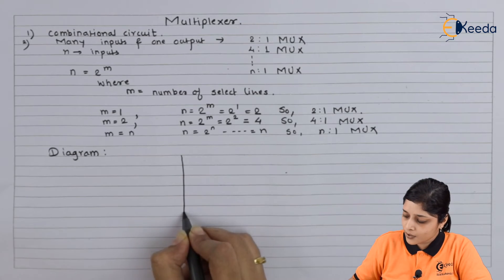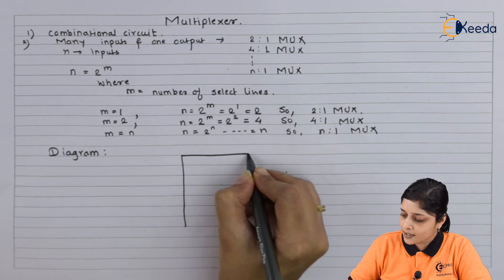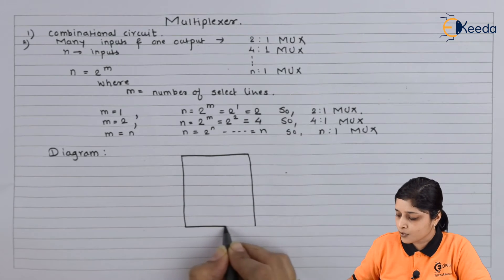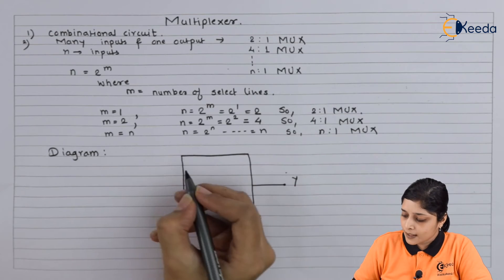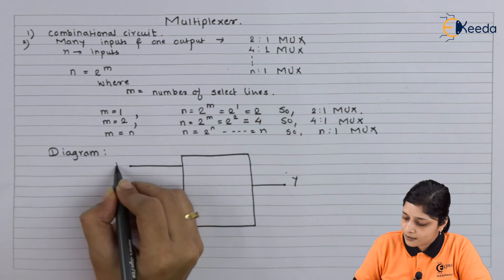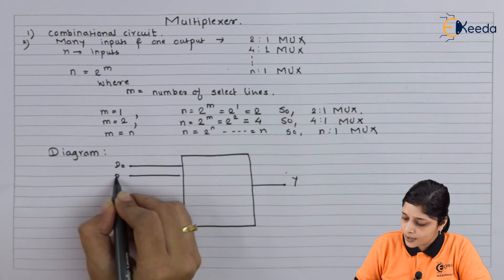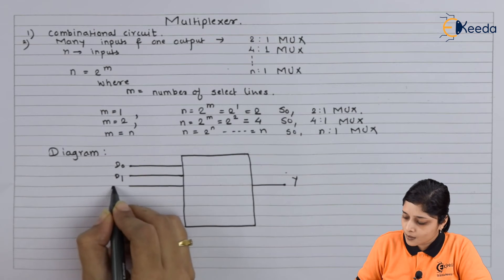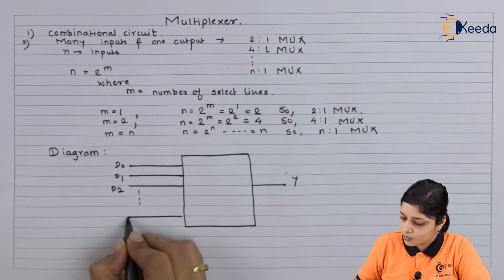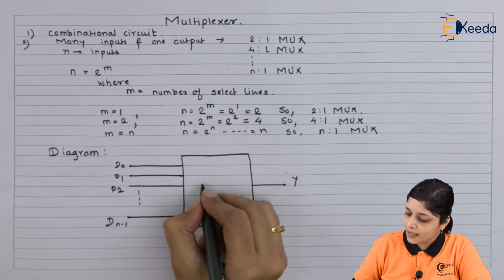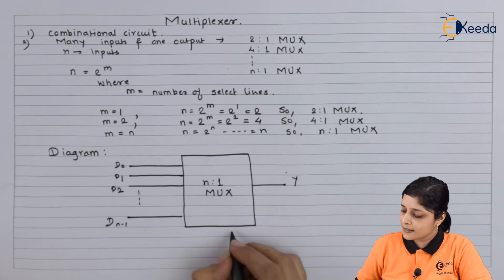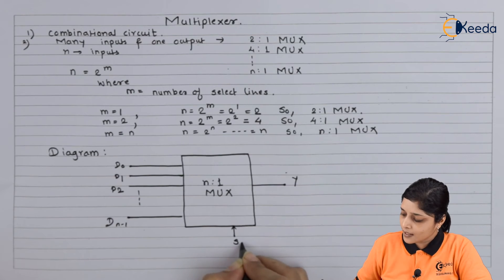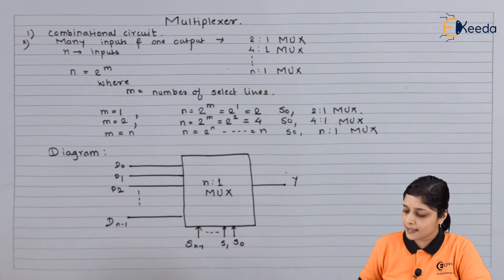Multiplexers are used to select one input out of many inputs and it gives only one output, that is y. And data inputs are here: d0, d1, d2, up to d(n-1). And MUX is n:1 MUX. It has select lines s0, s1, up to s(n-1).